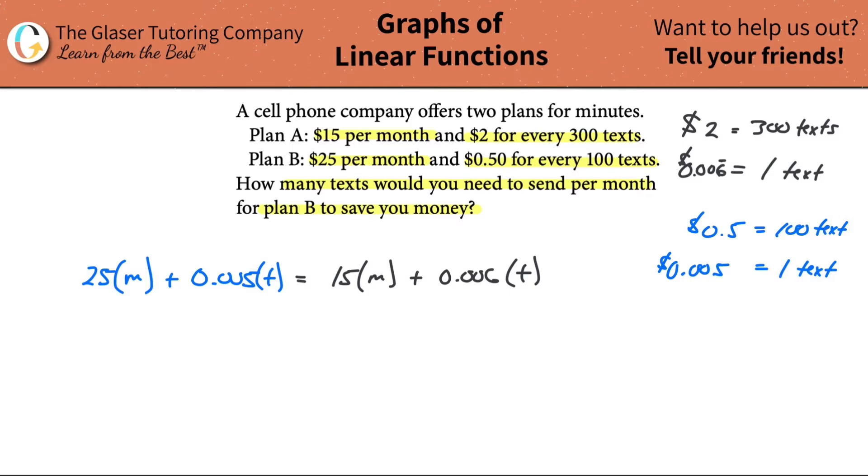Now what I need to do is combine some like terms. I've got some m's here, some t's. They're different variables, but let's start combining stuff. So let's subtract the 15m over to the left. Why did I do it that way? I kind of want to end up with a positive m, a positive coefficient there. So 25 minus 15 would be 10m. Then I'm going to do the opposite here. I'm going to bring this over, so minus 0.005t over to the right-hand side. Notice when I do that, it's also going to work out to be positive, so it makes it easier. This is going to be 0.001 times t.